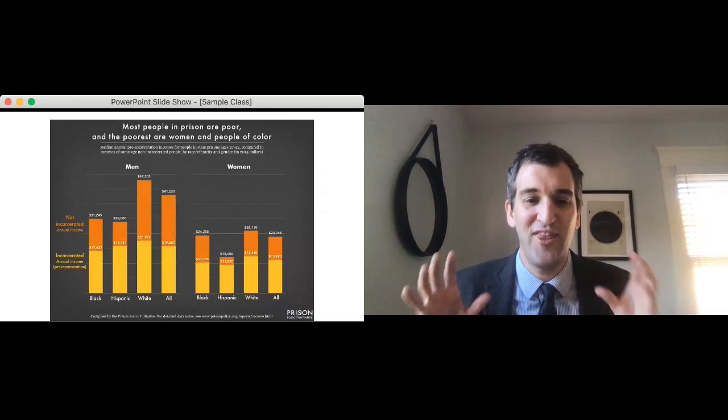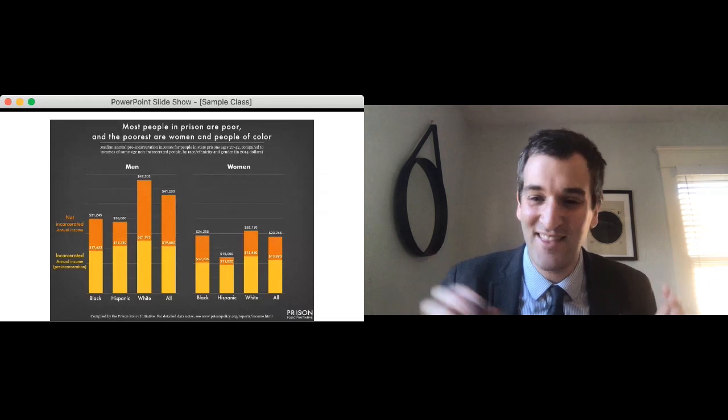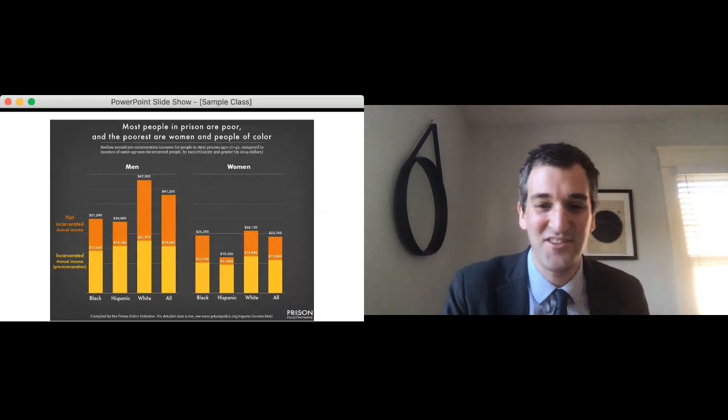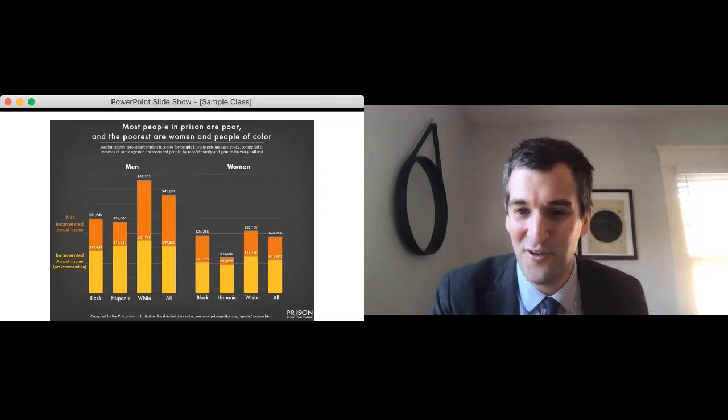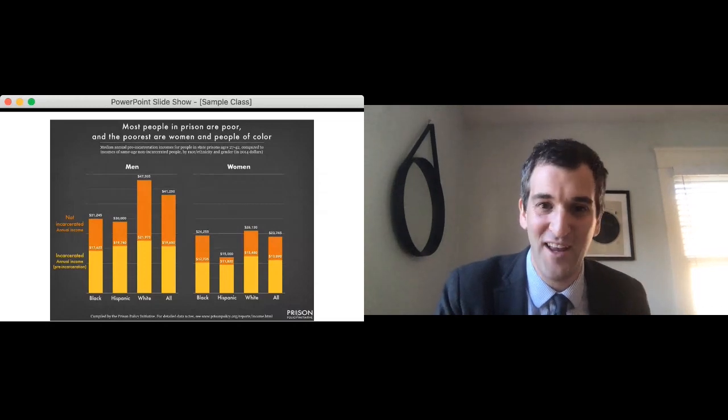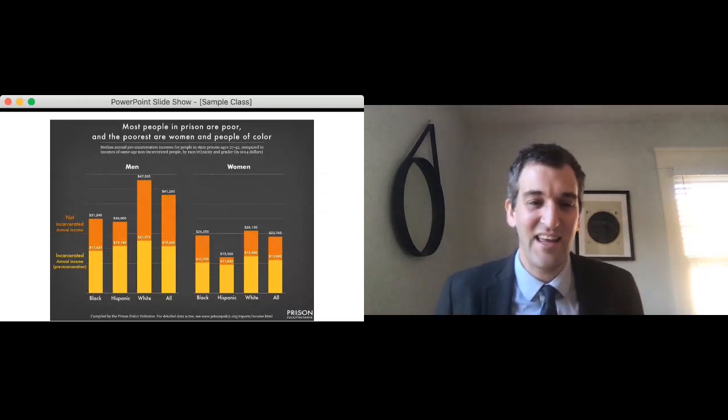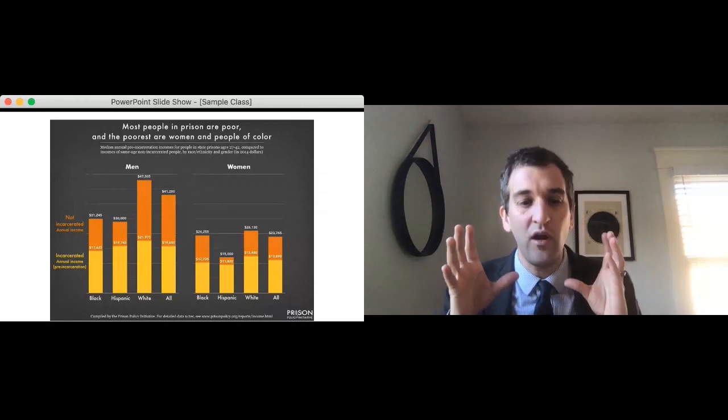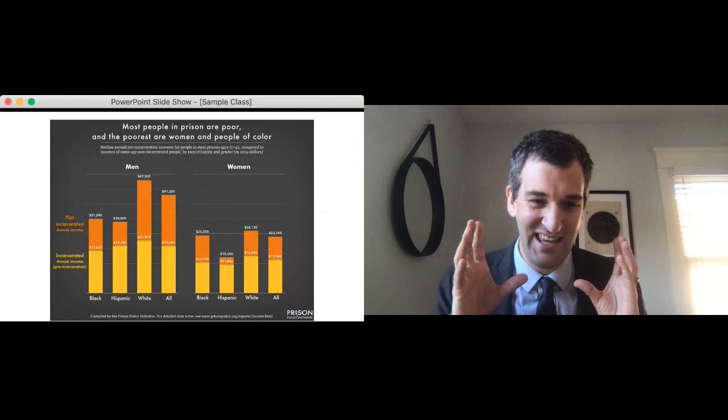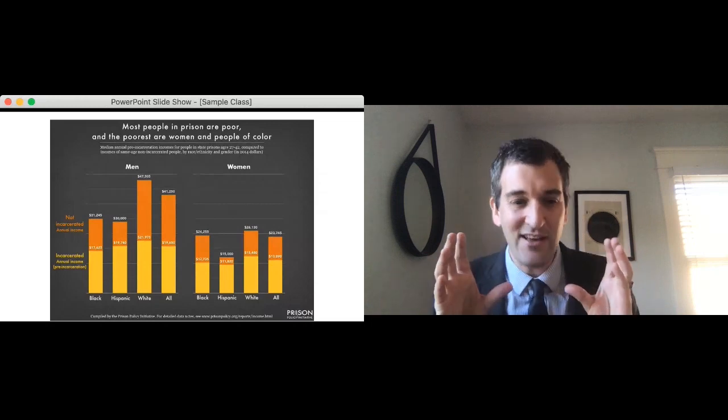And they are not equally represented in terms of economic class. This slide here, the dark orange shows the average median incomes of non-incarcerated people. And the brighter yellow is for different sex and race, the average annual incomes pre-incarceration of those who get incarcerated. As the slide makes clear, most people in prison are poor. So with that lengthy windup, let's just get straight into it. So the case that I hope many of you read for today's class is the case of Dudley and Stevens.